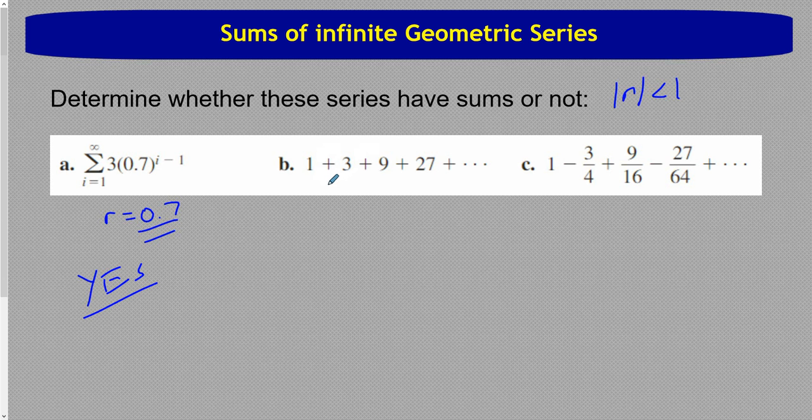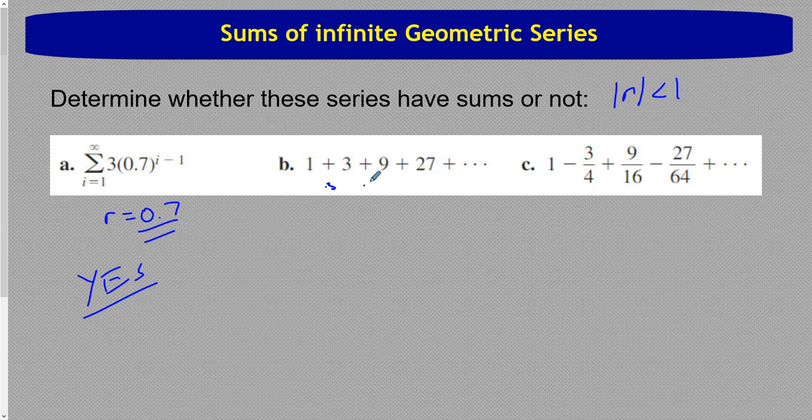B, we're multiplying by three every time. It seems to work. So r is three. That's bigger than one. So this does not have a sum.